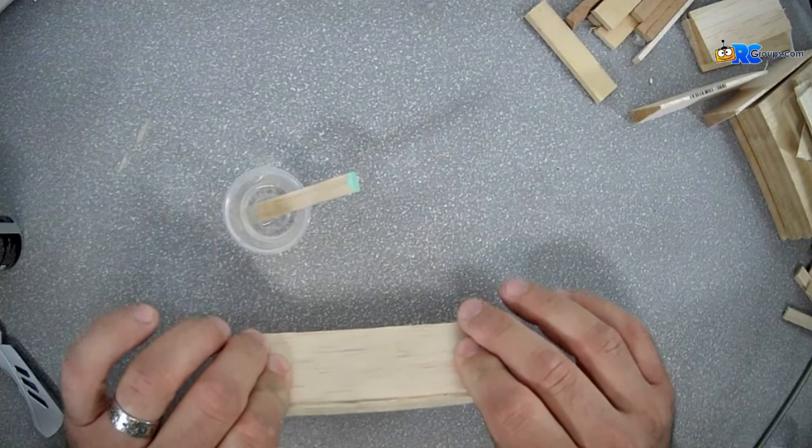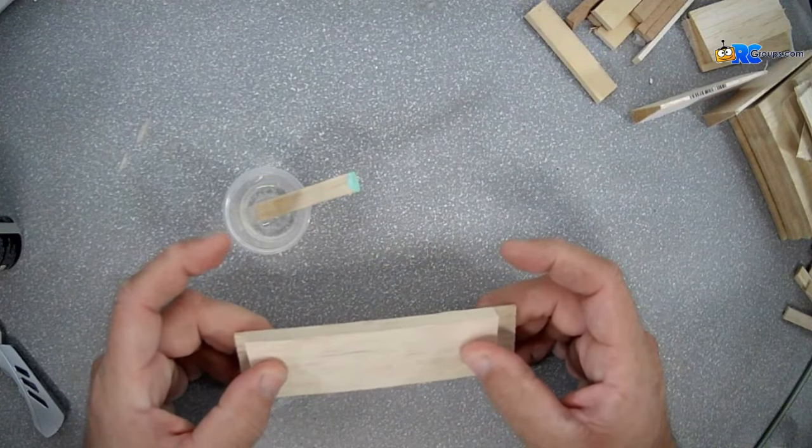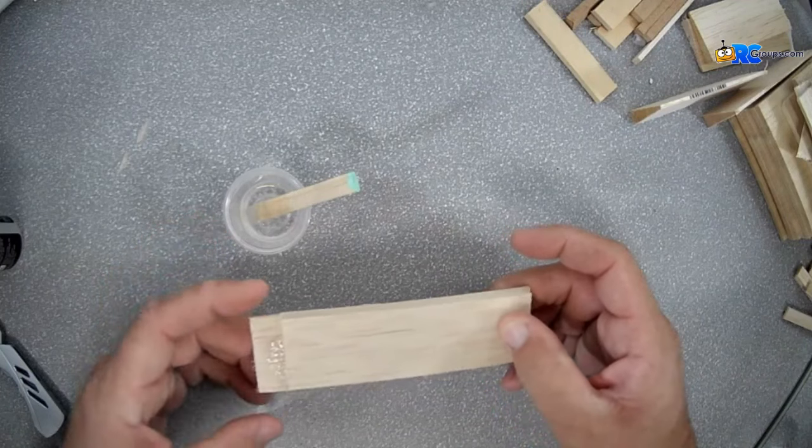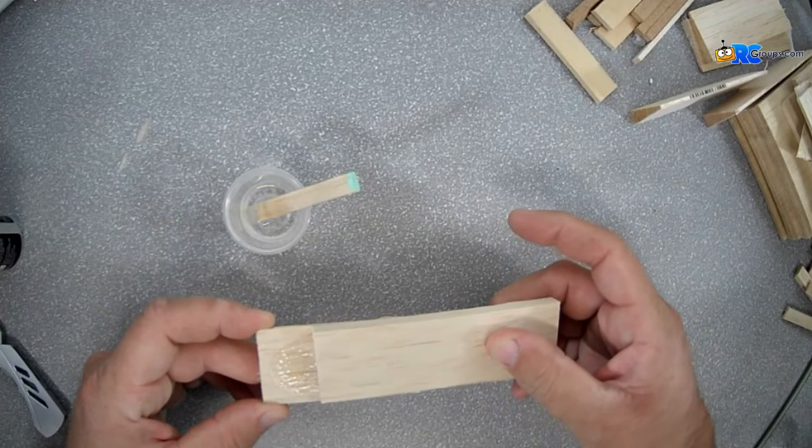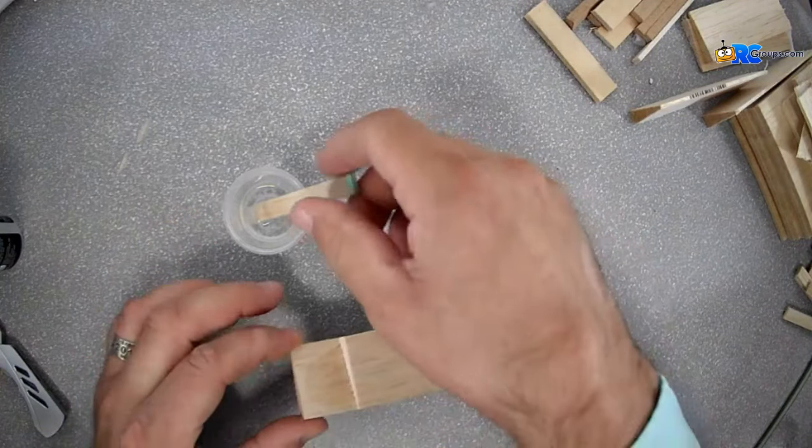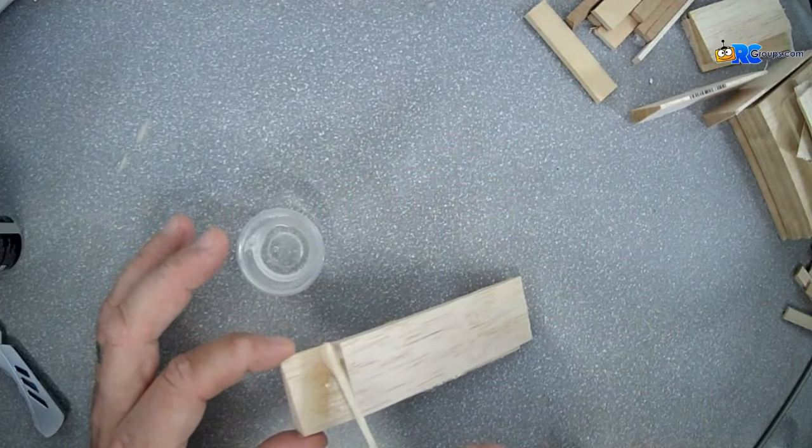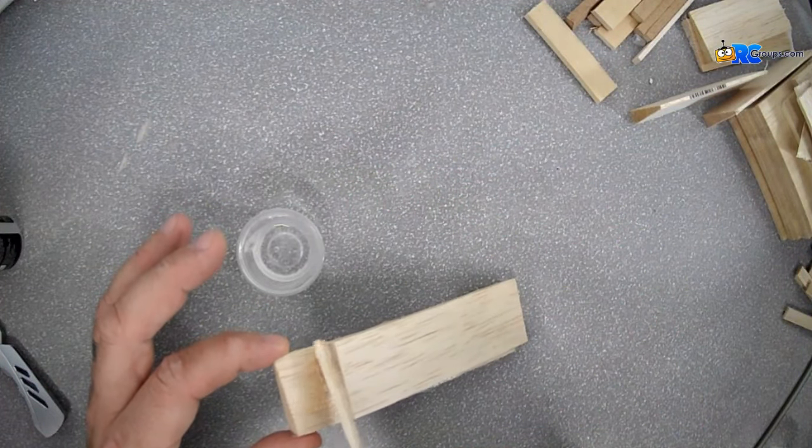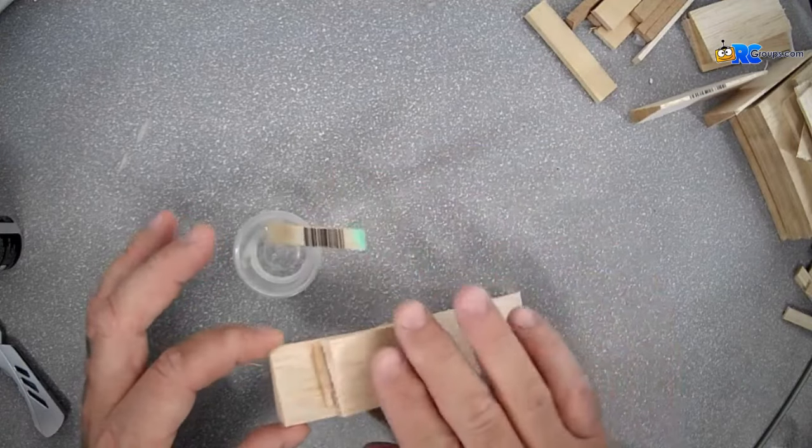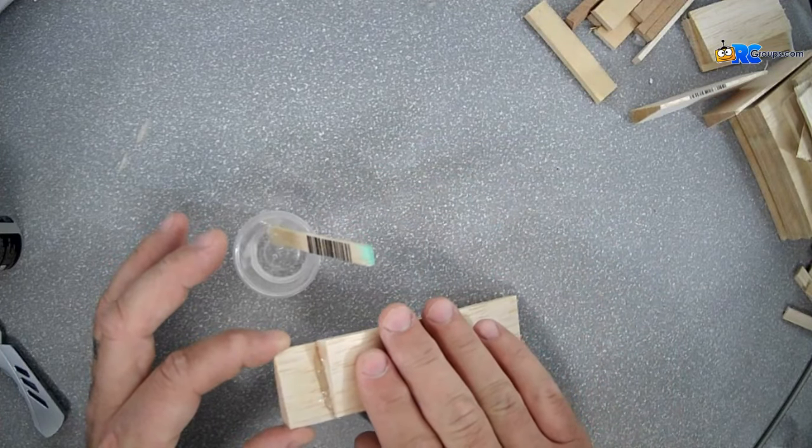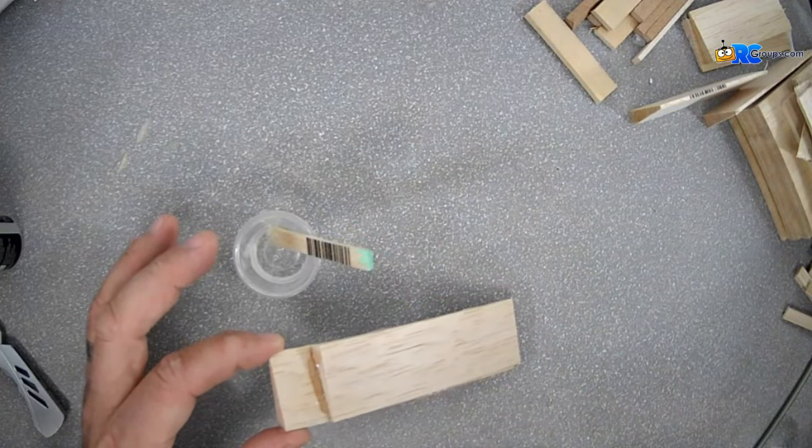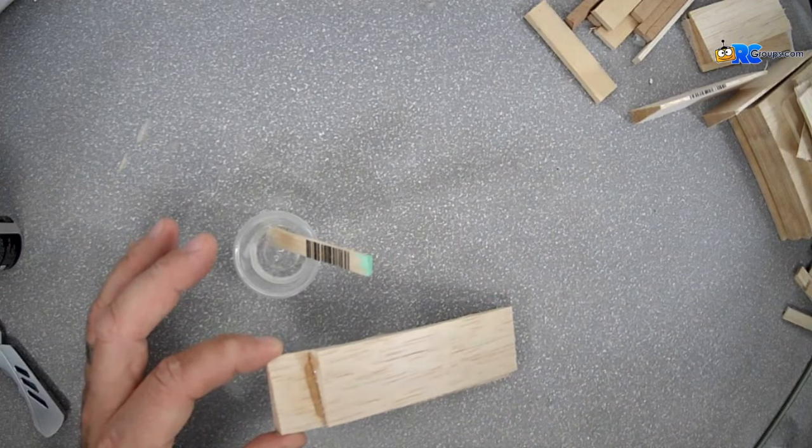And a great way of using our epoxies is on joints. So if you want to strengthen your ribs and your spars, that is a great way to make a fillet right in there and really strengthen up those joints.